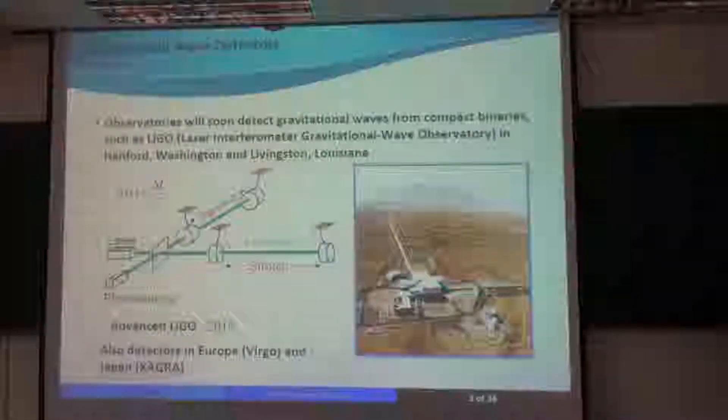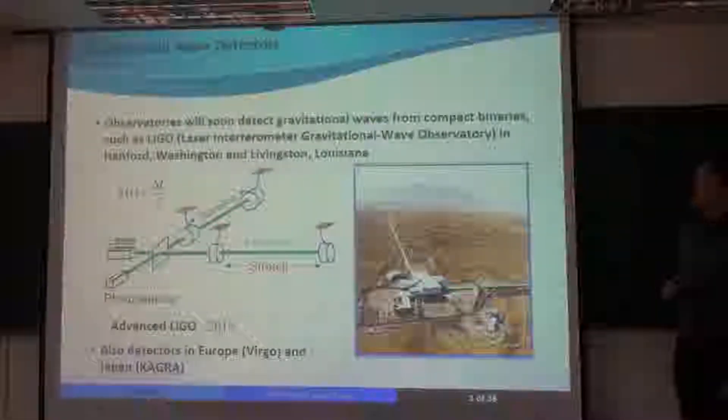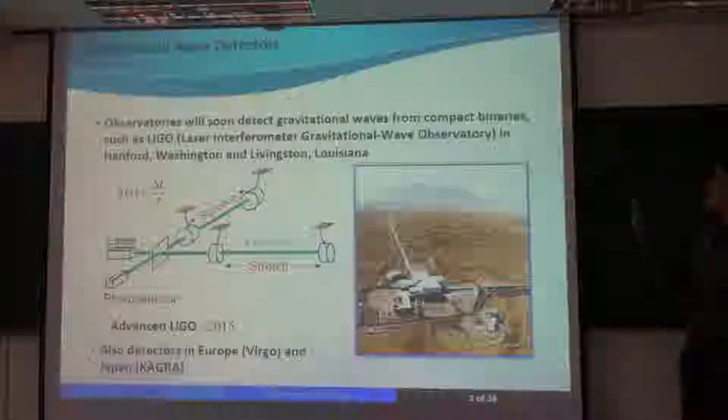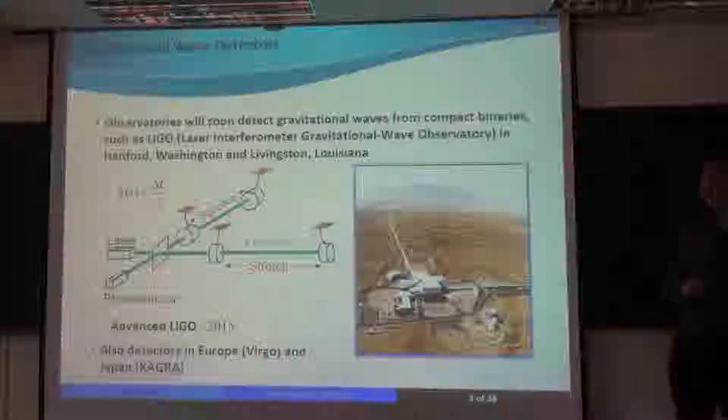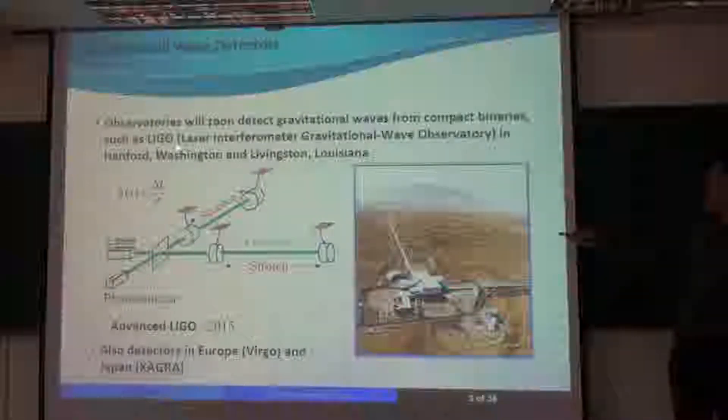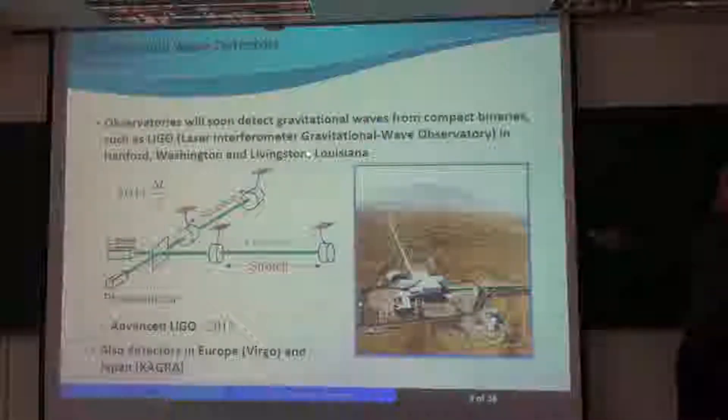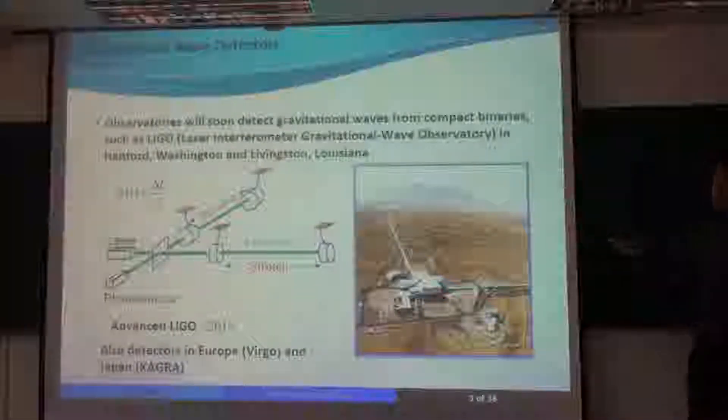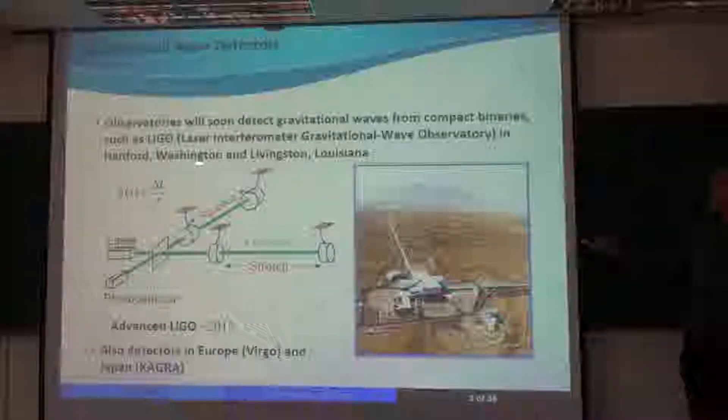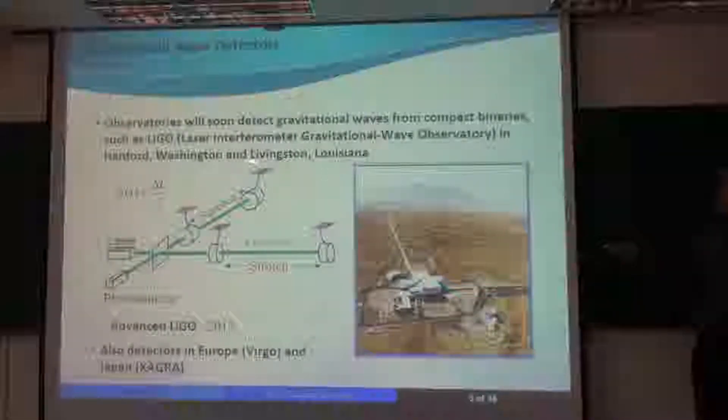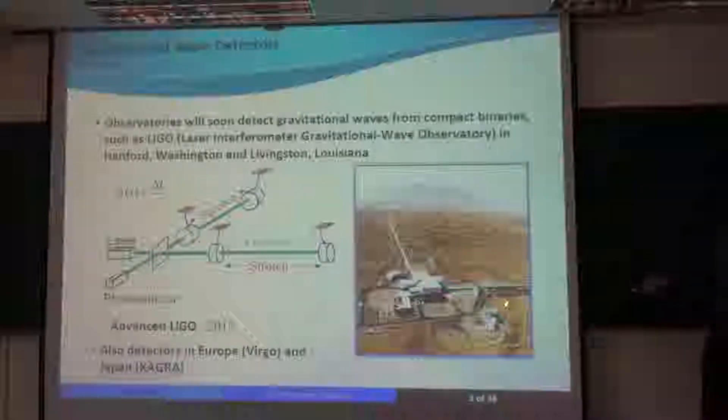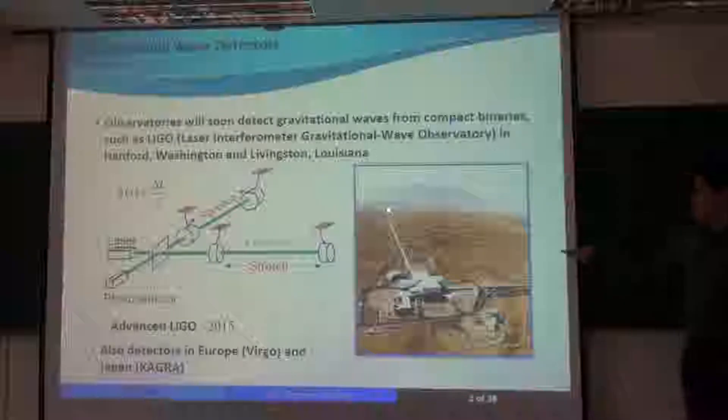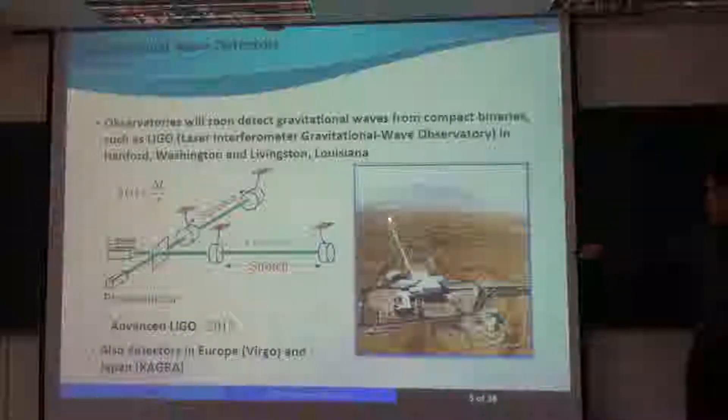So currently, there are experiments underway to detect gravitational waves from binary black holes and other compact binaries. One example is called LIGO, the Laser Interferometer Gravitational Wave Observatory, and this is based in the United States. There are two of these observatories. One is in Hanford, Washington, and one is in Livingston, Louisiana.